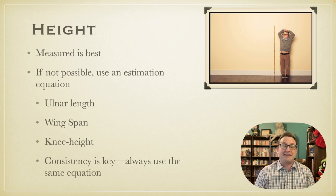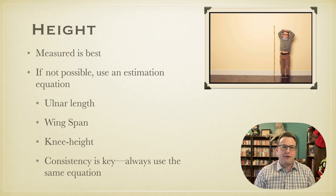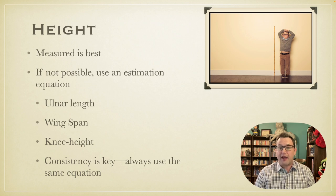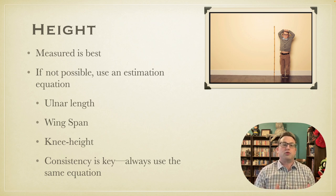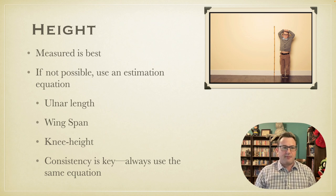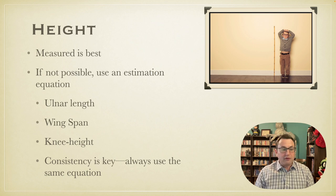Height is a sticking point in geriatrics. It's important in every nutritional assessment, and measuring it directly is best if you can — but it's very difficult with geriatric patients. Many are wheelchair-bound or bed-bound; others use a walker or cane and lean over. Even those who can stand may not be able to stand completely straight, and some cannot lie flat due to contractures. Backing them to a wall for a standard measurement usually won't work.